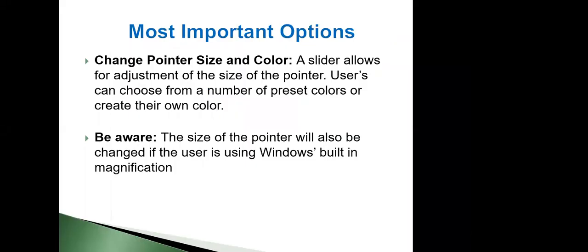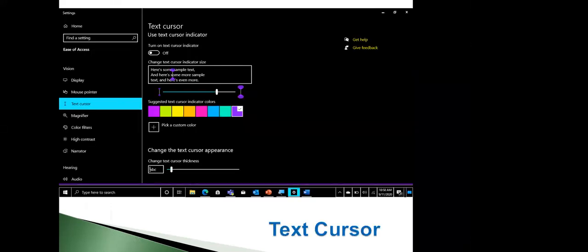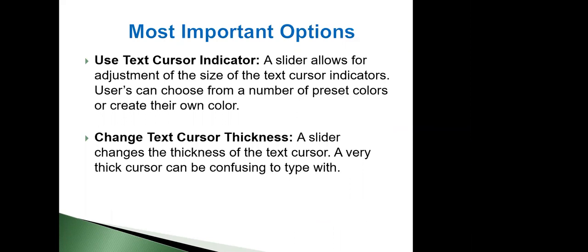Let's move on to the next option — the text cursor. This was an addition in the 2004 update, so you do need version 2004 to change this. What it's going to do is make our cursor much easier to see as we're typing. The most important options here are using the text cursor indicator — we have to turn it on manually, then a slider allows us to change the size of the indicators, and we can also change the color. The text cursor indicators are basically colored blobs above and below the text cursor, which can help you more easily find where it is.